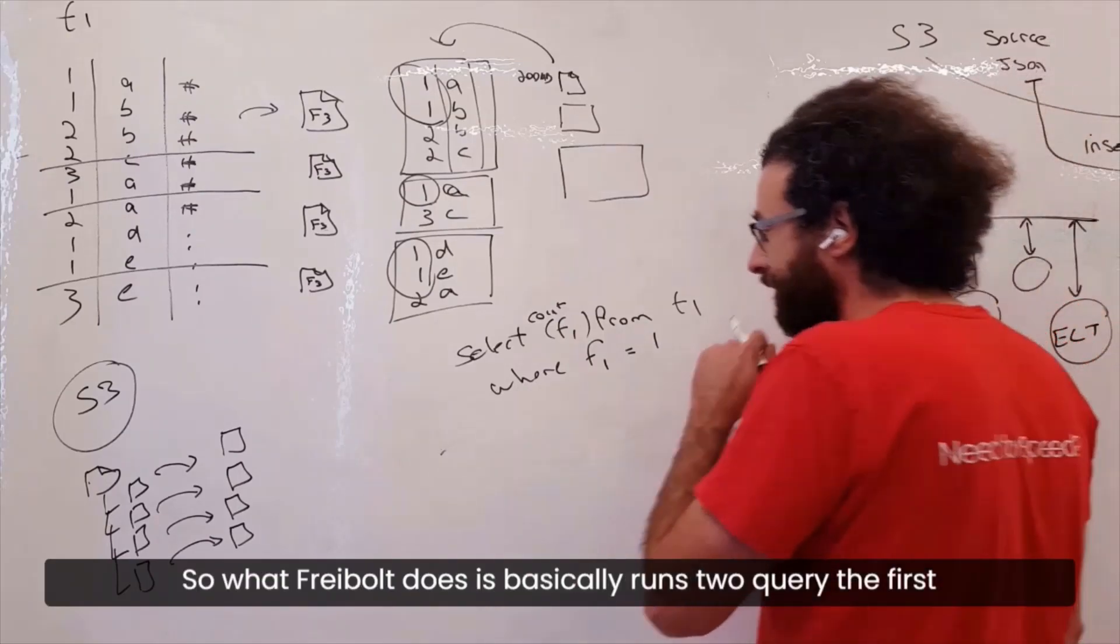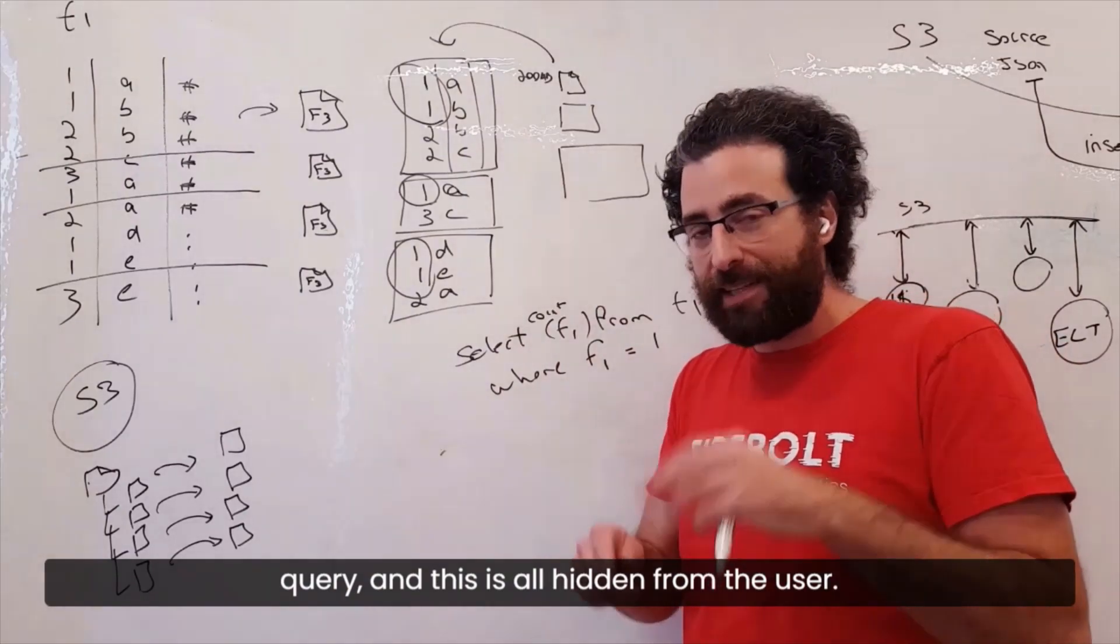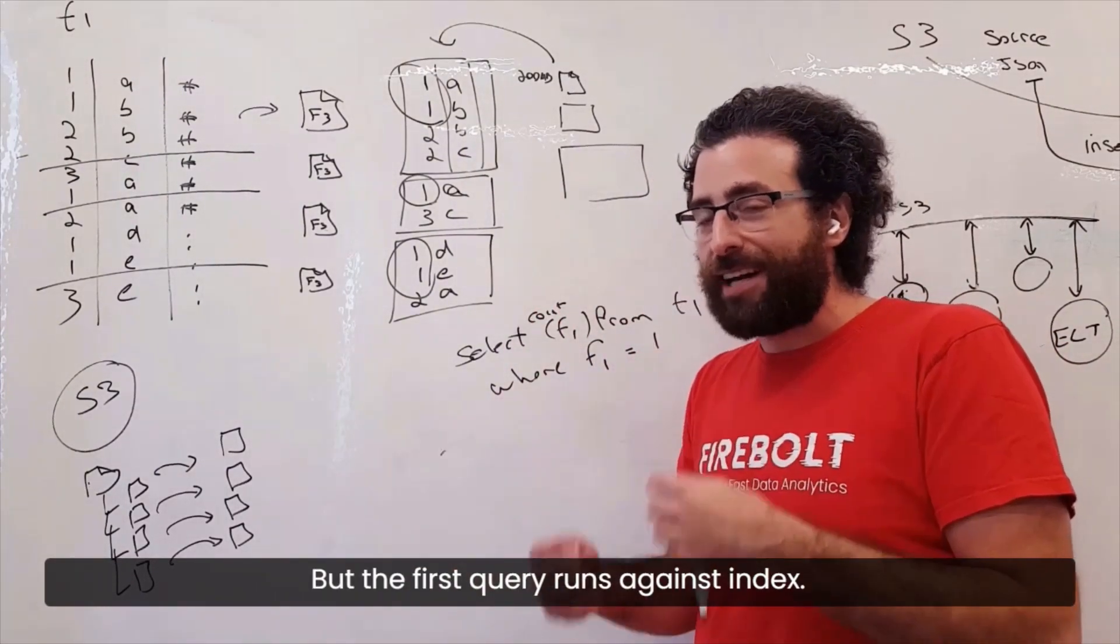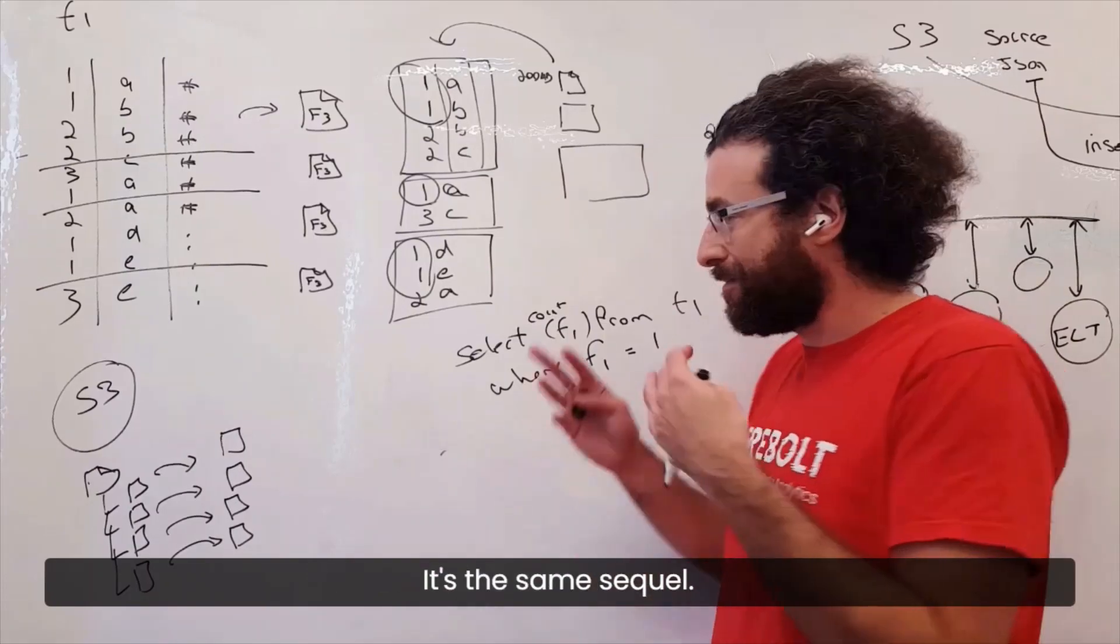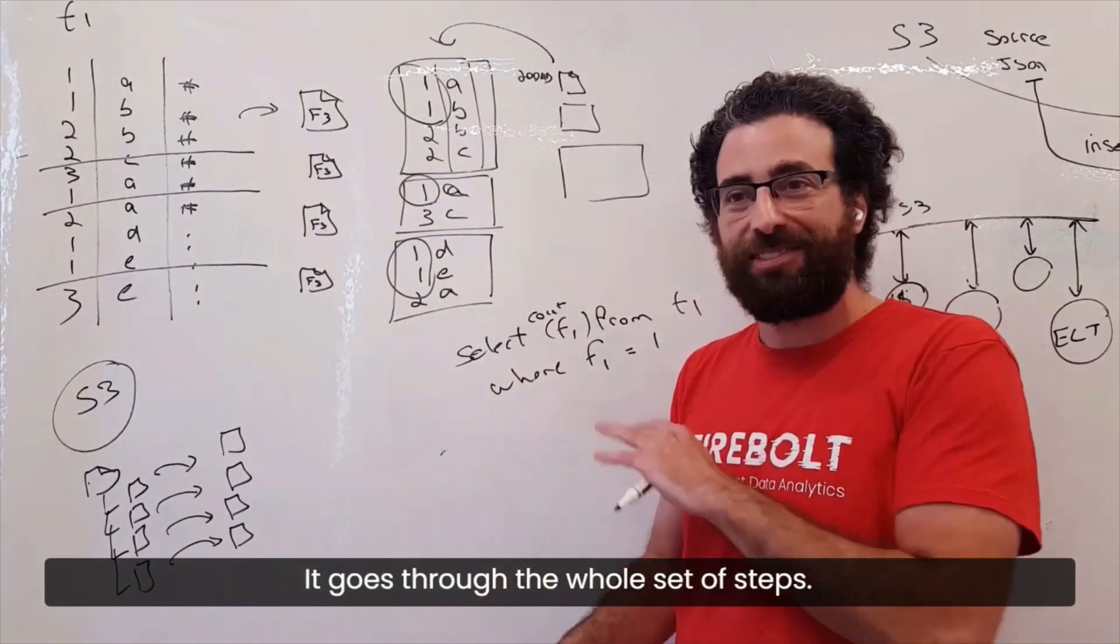So what Firebolt does is it basically runs two queries. The first query, and this is all hidden from the user, but the first query runs against the index. It's the same SQL. It's a query engine. It goes through the whole set of steps.